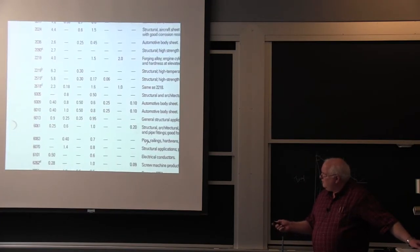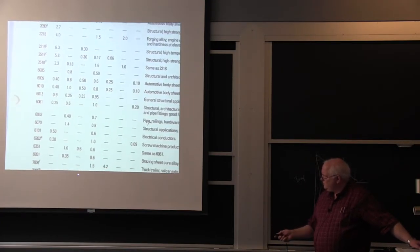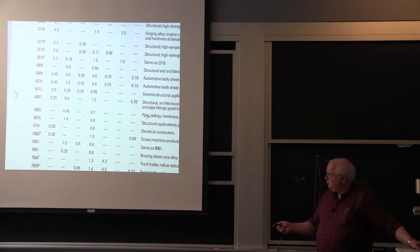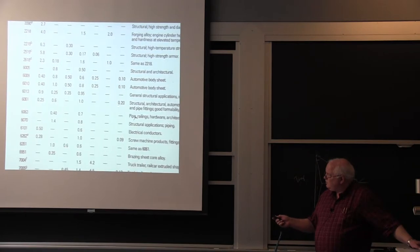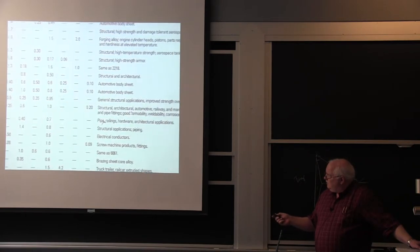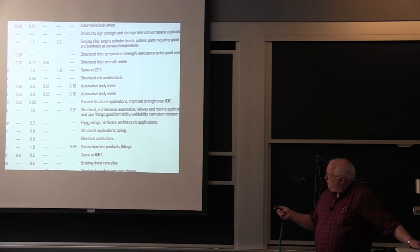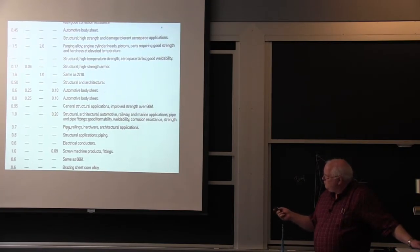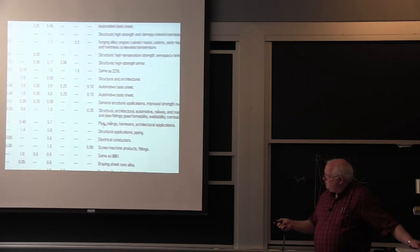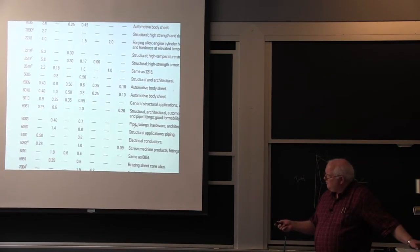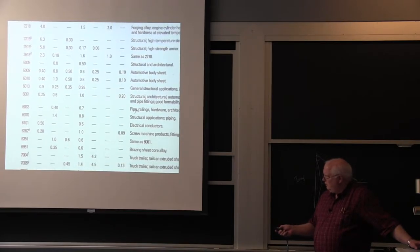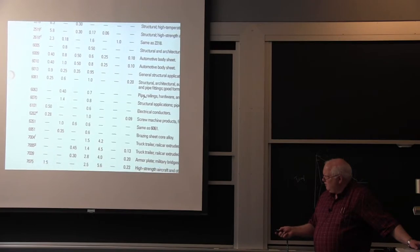Then you get to the 6000 series, these are the heat treatable wrought aluminum alloys. 6061 is the workhorse and it says structural alloy automotive railway marine applications, pipe and pipe fittings, good formability, weldability, corrosion resistance and strength. And I told you that it's probably the most commonly used aluminum alloy available as extrusions, sheet, plate. Go to a supply center and it has everything.